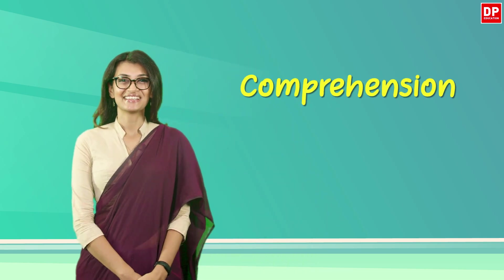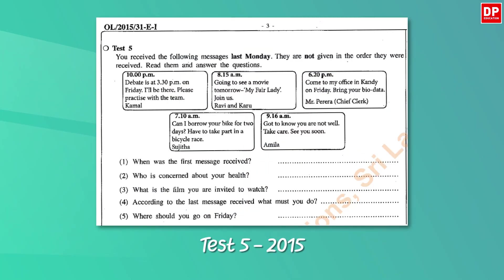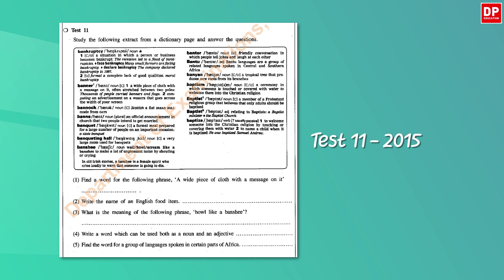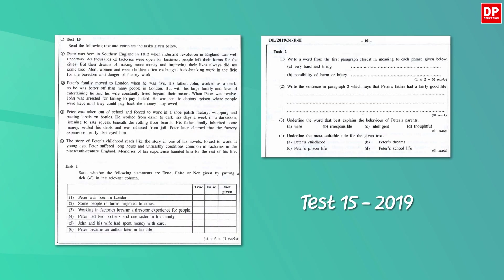Good day, students of Year 11. Today's lesson will be on how to attempt questions on comprehension passages. If you glance through your O-level paper, you will note that there are quite a few comprehension passages. You may have short comprehension passages like Test 5 in the 2015 paper, which is based on text messages. Test 7 for the last five years has been based on comprehension passages and carries seven marks. You may even get a comprehension passage on an excerpt from a dictionary, like Test 11 in the 2015 paper.